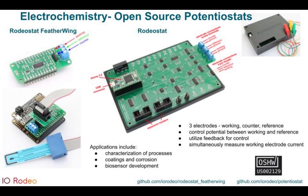These are typically not passive instruments. You may on some occasions hold the voltage between the working and reference electrodes constant, but in many more cases you're varying it according to some desired waveform — sweeping the output through a ramp, cycles, or pulses. The changes in the current tell you a lot about the electrochemical processes occurring on the electrodes, allowing you to characterize things like reductive potentials or the reversibility of reactions.